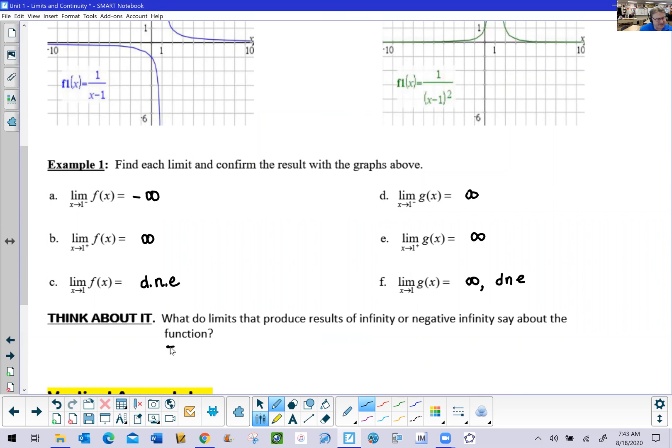As we look back at our graph, they reveal something. And hopefully, you all came up with the same answer. They reveal locations of vertical asymptotes. And that's why we study this.